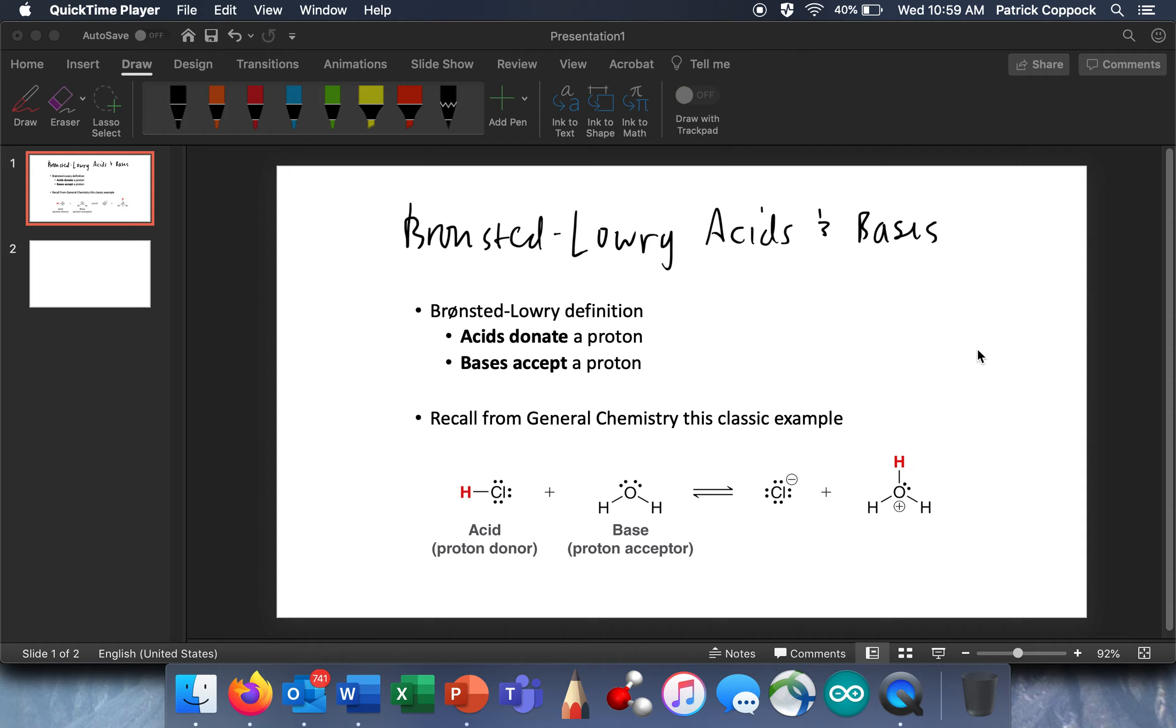A Bronsted-Lowry acid is a compound that donates a proton. So there's a proton right there. By the way, we call it a proton because a hydrogen atom has no neutrons. If we had one that had neutrons, it would be a deuterium. So a hydrogen atom has no neutrons. That's the symbol for it. And so when a hydrogen ion is donated, we call it a proton. That's what that is.